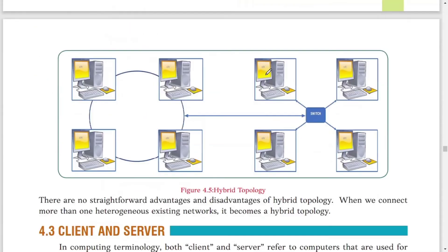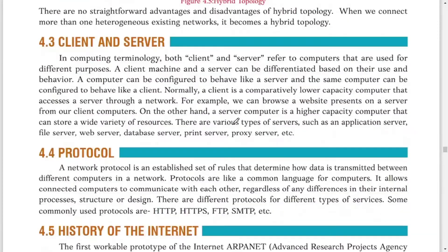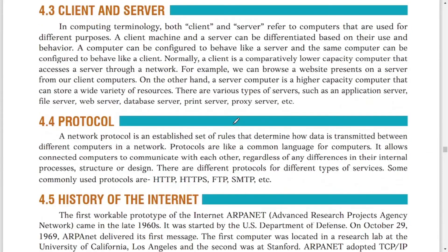Hybrid topology is a collection of ring, star, and bus topologies. In a hybrid topology diagram you may see a ring section, a central cable acting as bus, and a star section — it is a collection of all the topologies.